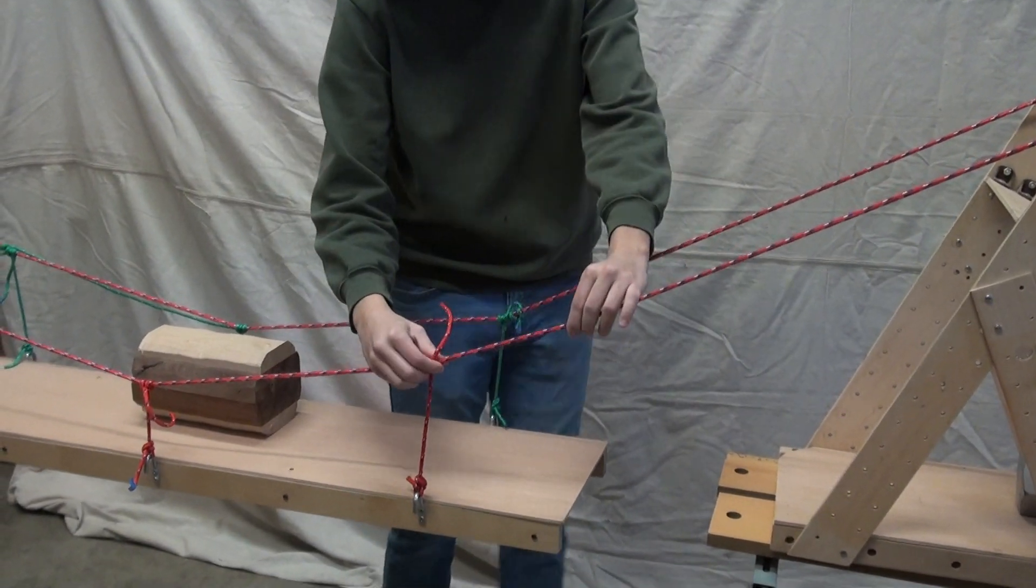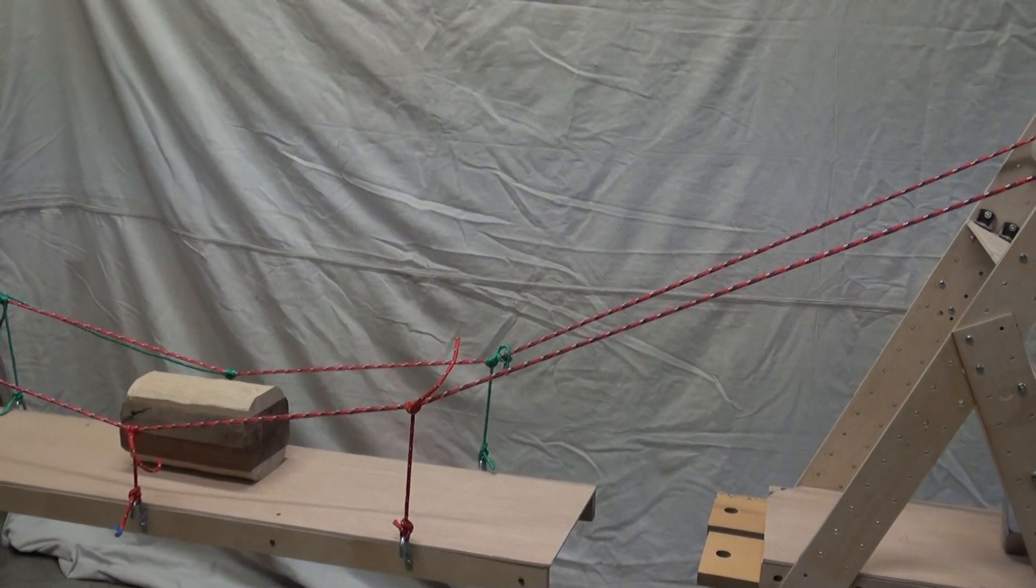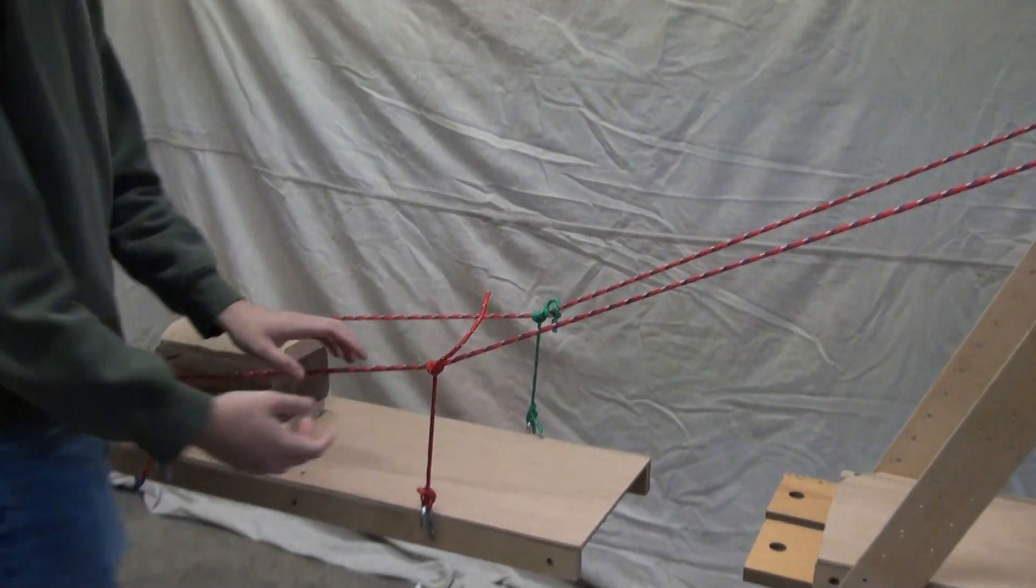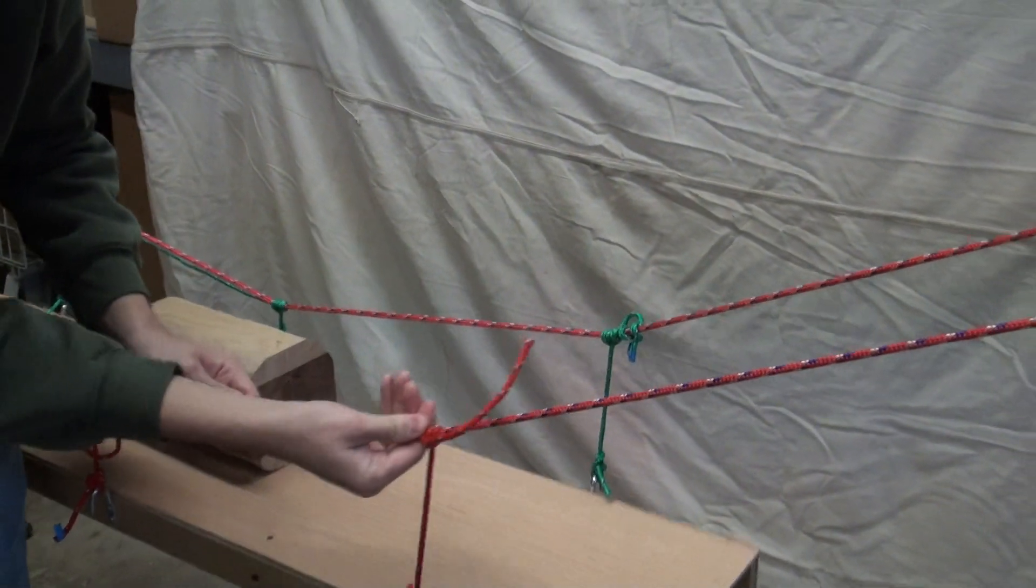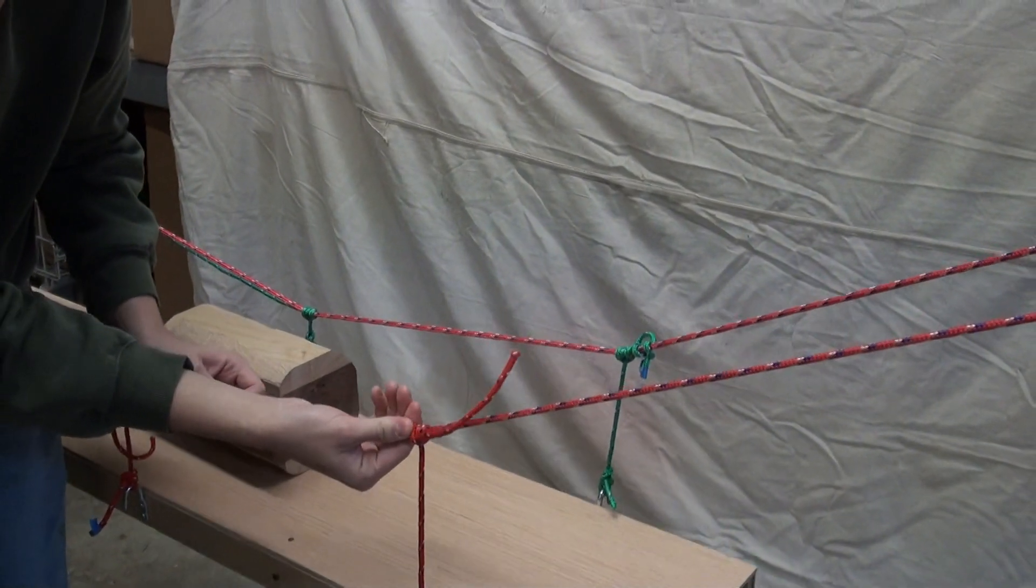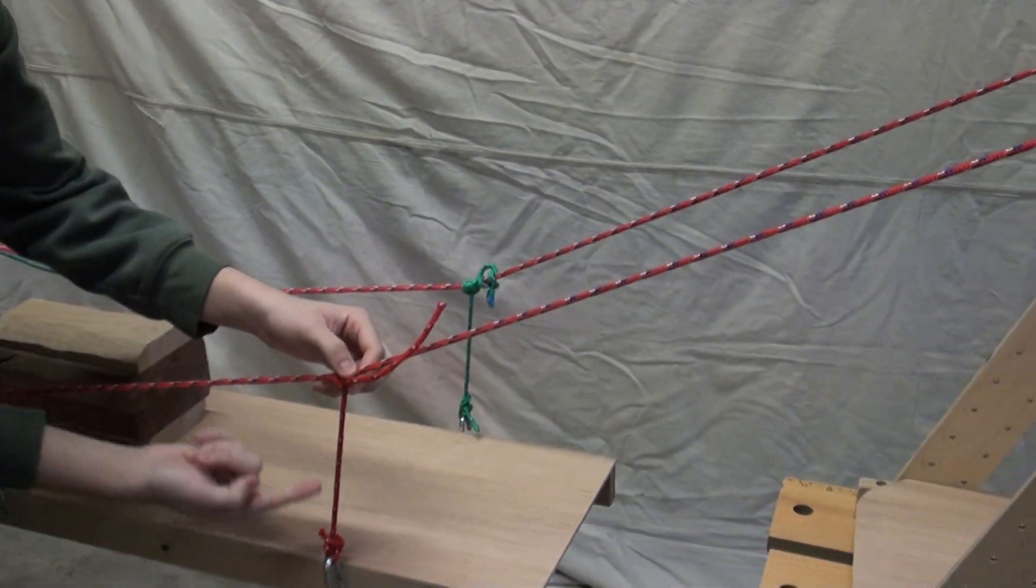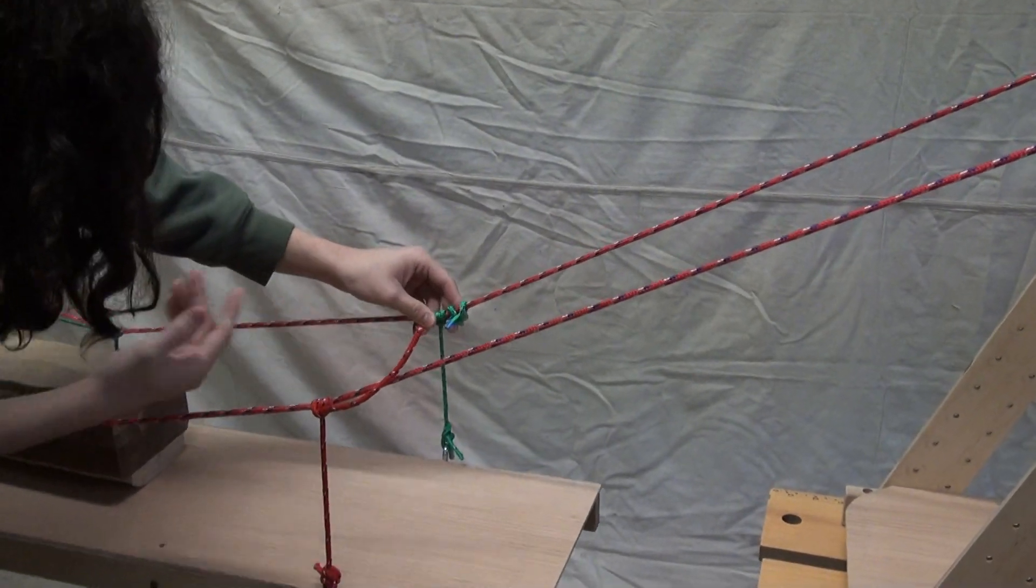Come over on this side. Come around here. These are very useful when setting up the suspension bridge because you can easily slide them over. Because we want each pair of suspenders to line up with the one on the opposite side of the deck, and we can adjust them however necessary.